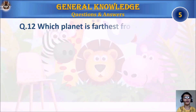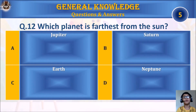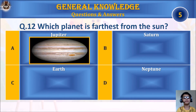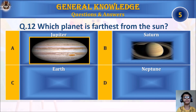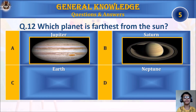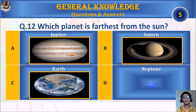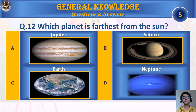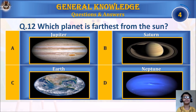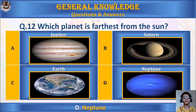Question 12: Which planet is farthest from the Sun? A. Jupiter, B. Saturn, C. Earth, or D. Neptune. Your time starts. The answer is D. Neptune.